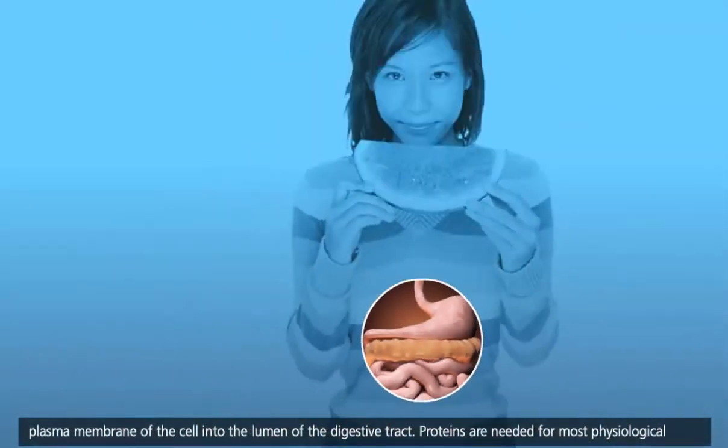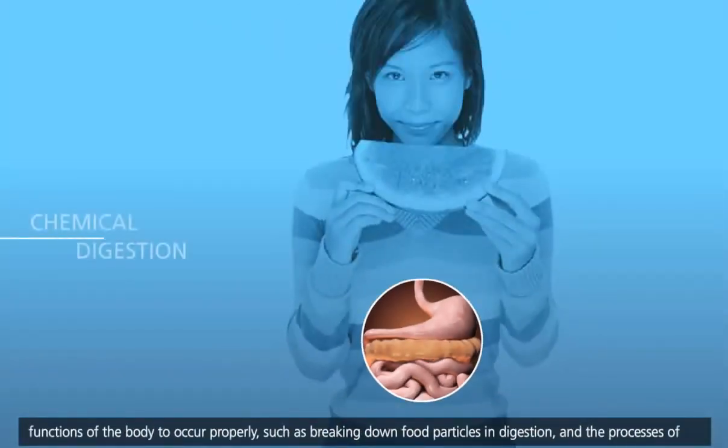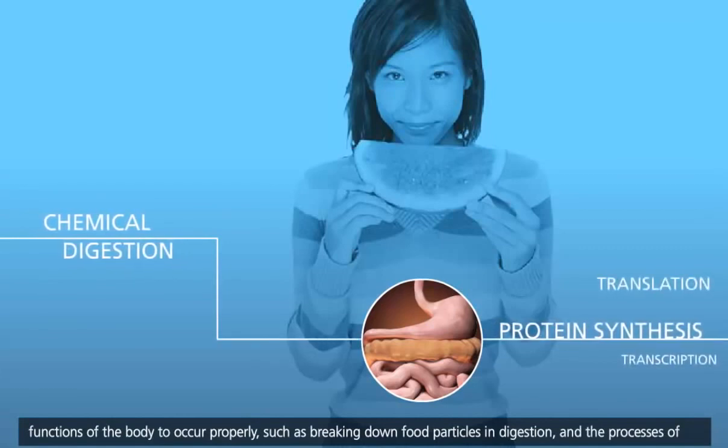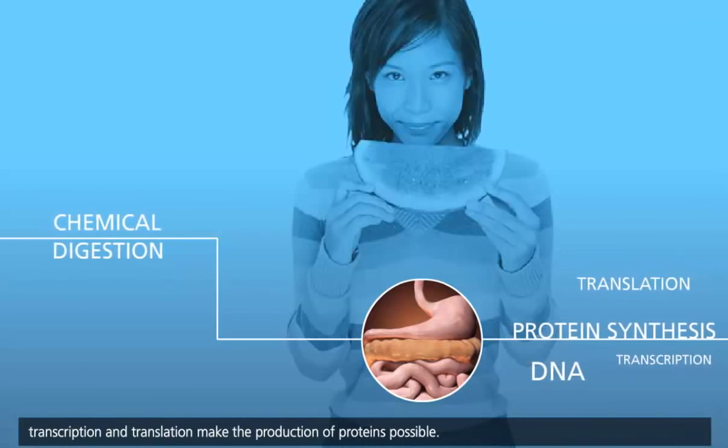Proteins are needed for most physiological functions of the body to occur properly, such as breaking down food particles in digestion, and the processes of transcription and translation make the production of proteins possible.